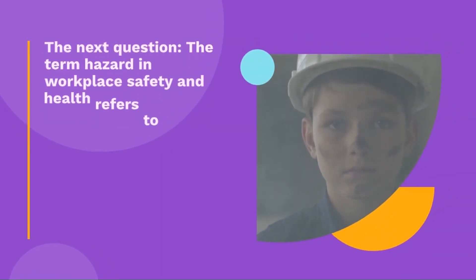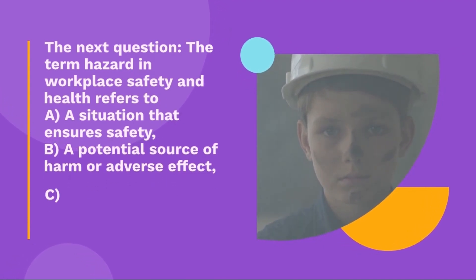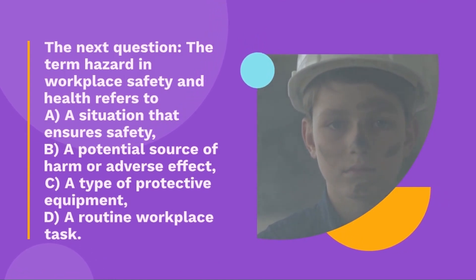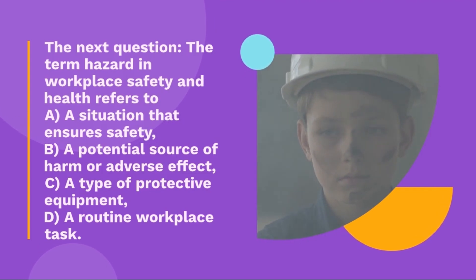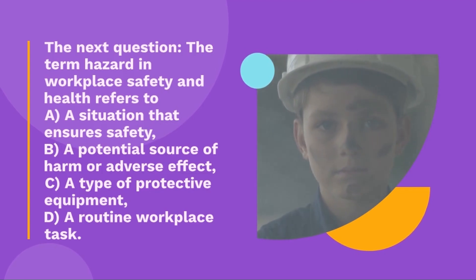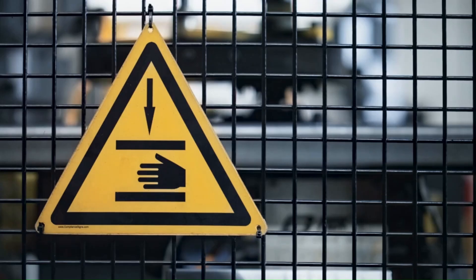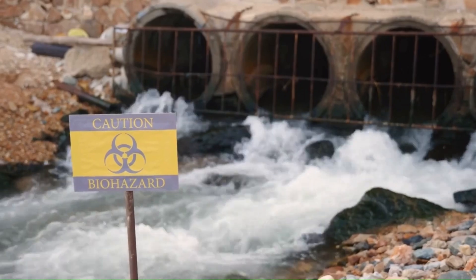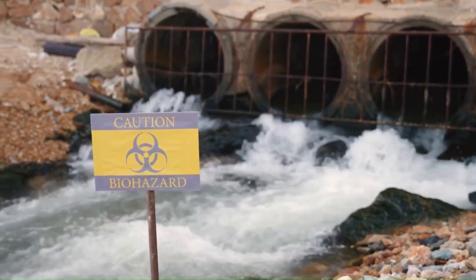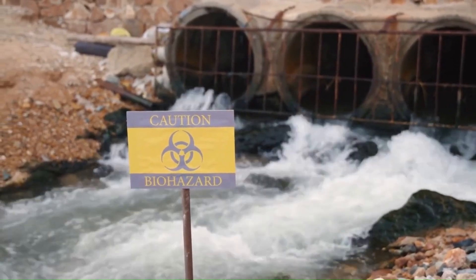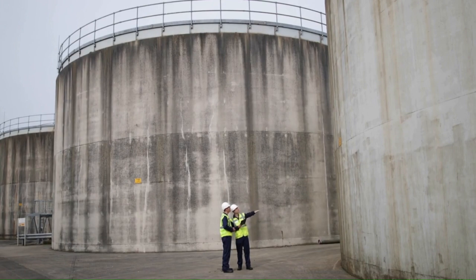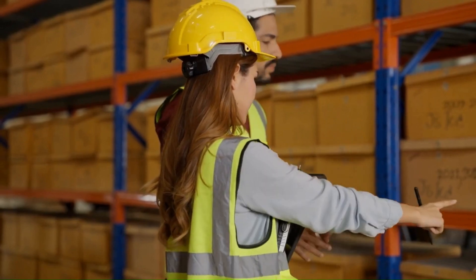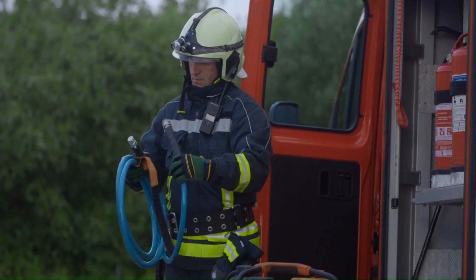Question 3: The term 'hazard' in WSH refers to: A — a situation that ensures safety, B — a potential source of harm or adverse effect, C — a type of protective equipment, or D — a routine workplace task. A hazard means a potential source of harm or adverse effect. A hazard is something that can cause harm, like a sharp tool or a slippery floor. Recognizing hazards helps prevent accidents — identifying a hazard is the first step in preventing them.